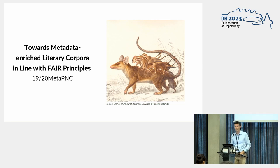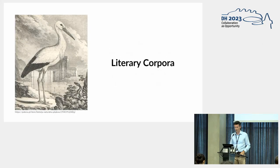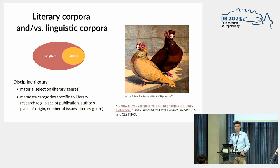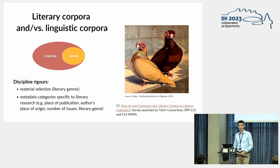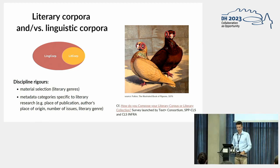Hello everybody, it's nice to be here. I will be presenting a group effort, and as an introductory part I would like to stress three elements of the title of the presentation. The first one is literary corpora — its definition is quite self-explanatory, but it's important to see a literary corpus in the neighborhood of a linguistic corpus as a bigger element. If we want to see a literary corpus as something separate, we have to follow some discipline specificity for material selection and metadata categories specific to literary research.